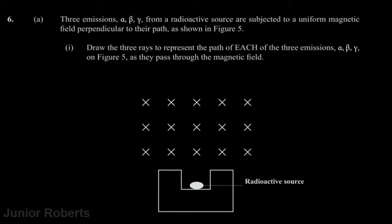The question says: three emissions — alpha, beta, and gamma — from a radioactive source are subjected to a uniform magnetic field perpendicular to their path as shown in figure five. Draw the three rays to represent the path of each of the three emissions — alpha, beta, and gamma — on figure five as they pass through the magnetic field. So we have our three radioactive emissions: alpha, beta, and gamma.